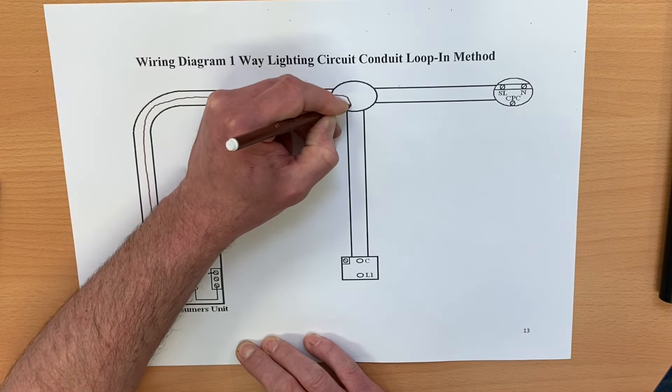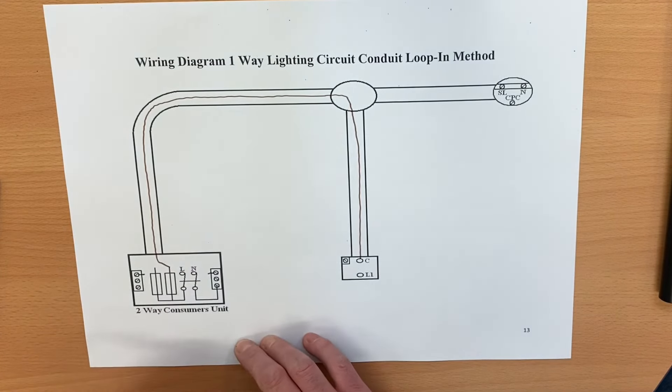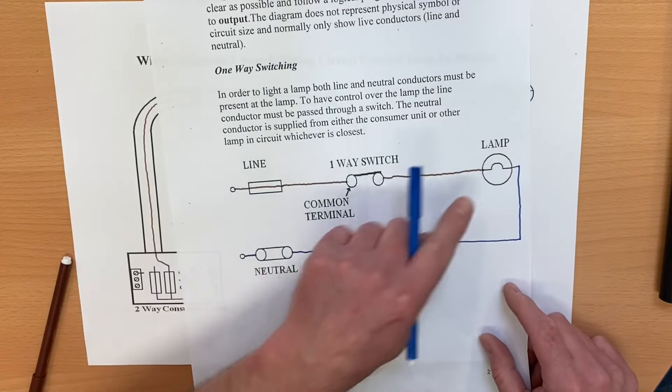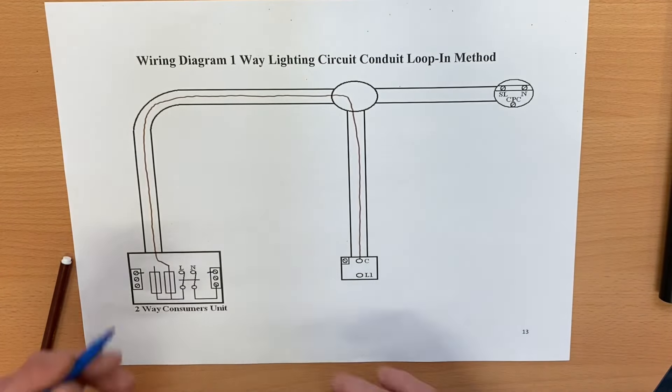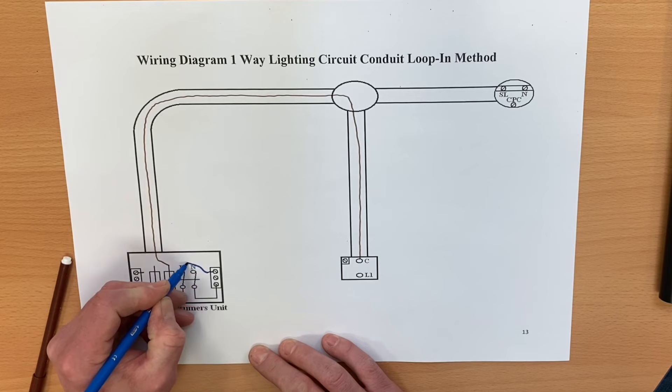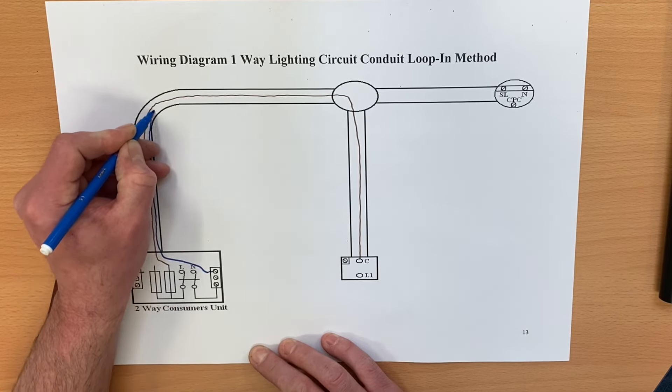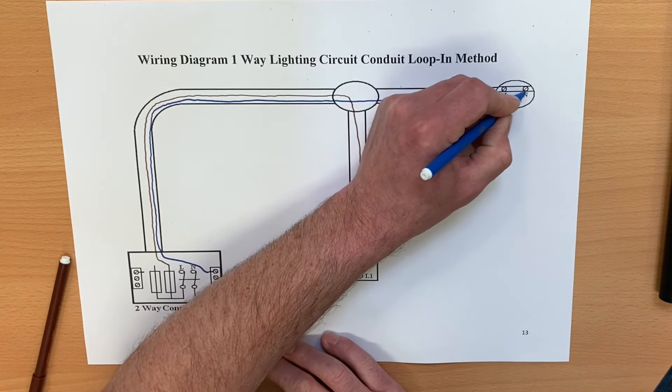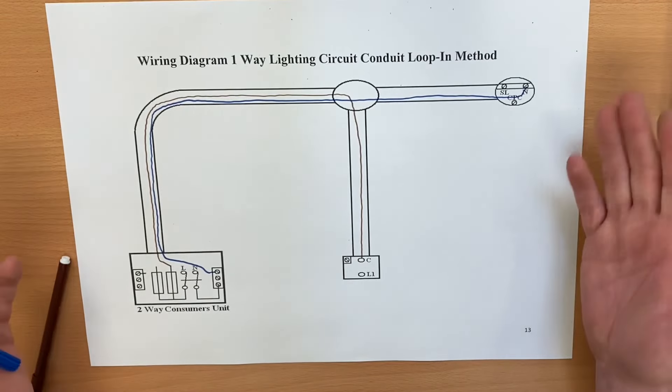Next, neutral. We said the neutral went from the consumer unit directly to the light. So let's do that. From the consumer unit directly to the light. Out of our neutral connection here - I'm sure you'll make a really neat job of doing this compared to my freehand effort - that comes straight into here and goes into the neutral of our lighting point itself.